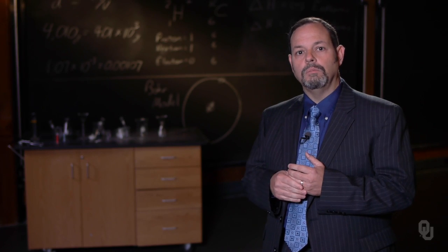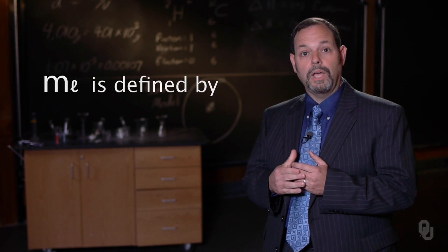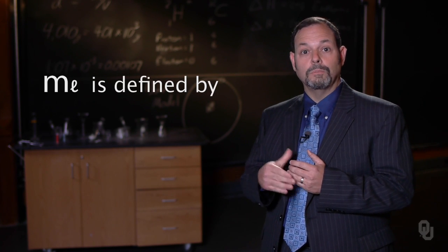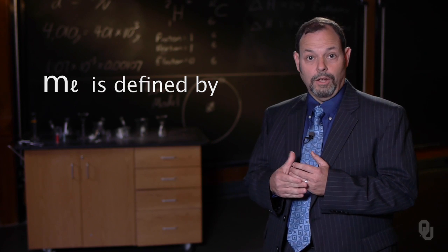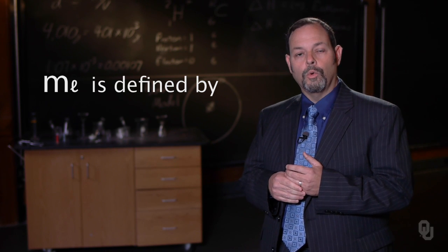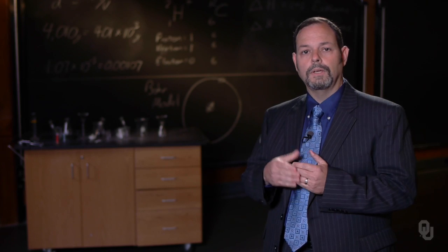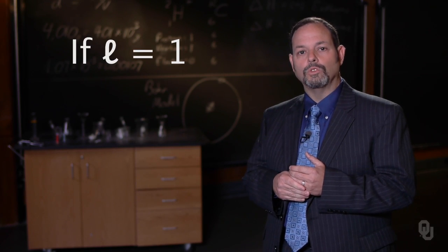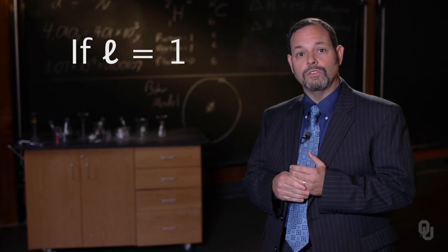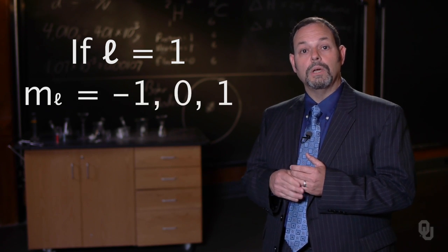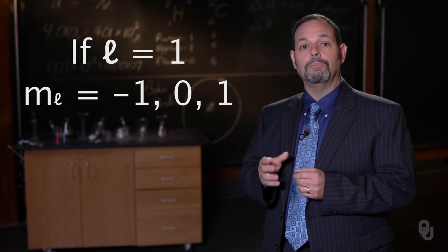Our next quantum number is M sub L. As you might determine from the fact that it's M sub L, it's going to be defined by L. M sub L is our orientation. It's usually given by minus L as whole integers down to zero, and then past zero up to plus L. If we take L equals one, that means that our orientations for M sub L will be minus one, zero, and plus one.